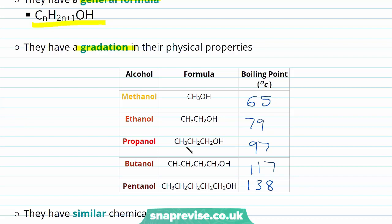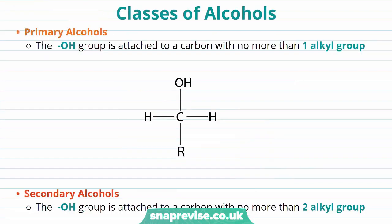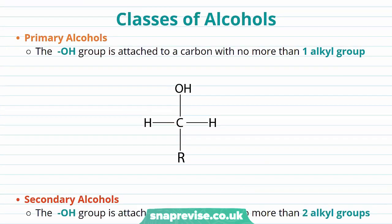As you can see, as the carbon chain length increases within our alcohol molecule, the boiling point increases too, and that's a trend we'll take a look at later in this video. As we expect in our homologous series, our alcohols have similar chemical properties as well. Our alcohols can be subclassified into three groups: the primary, secondary and tertiary alcohols.